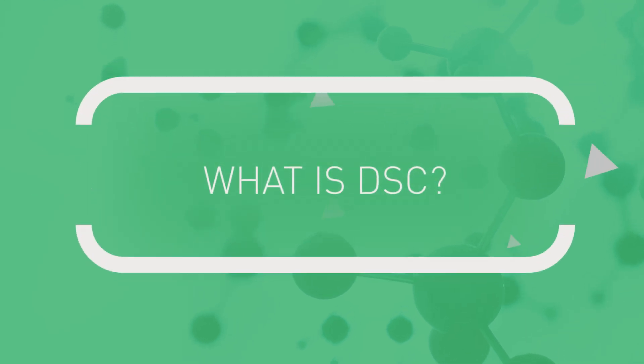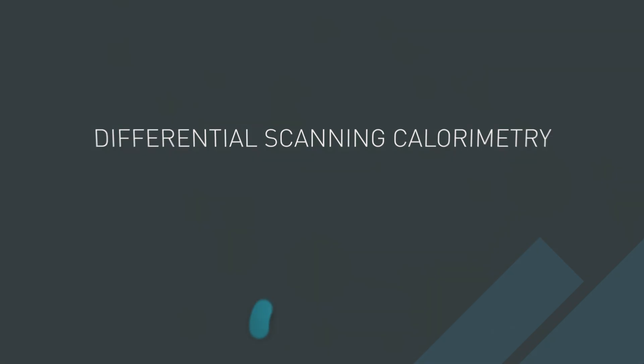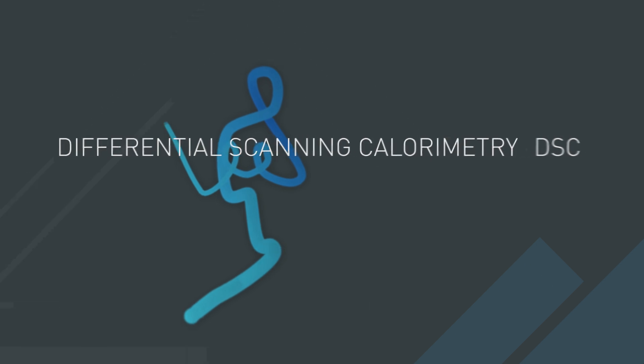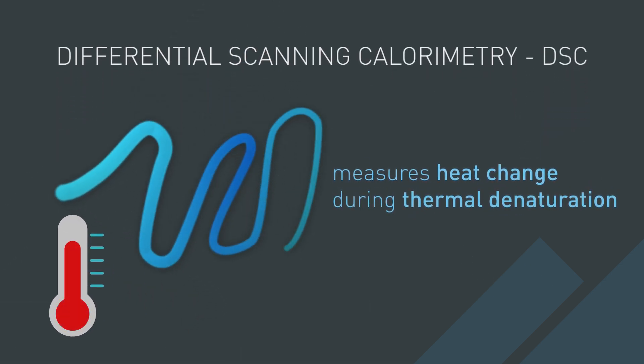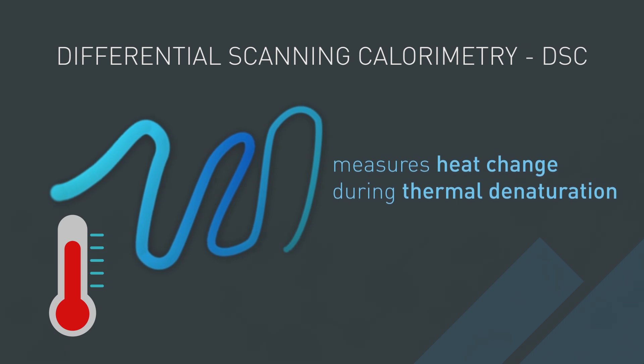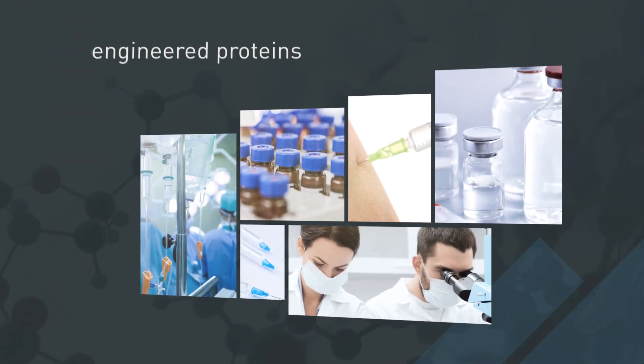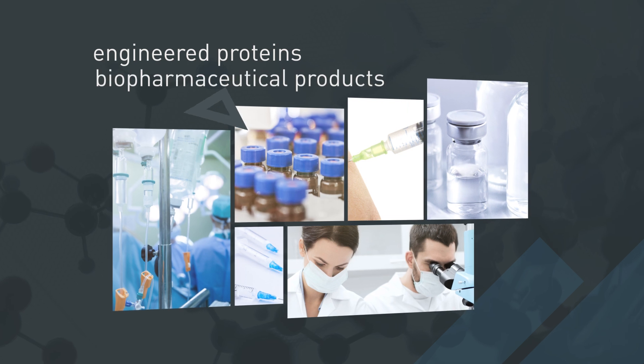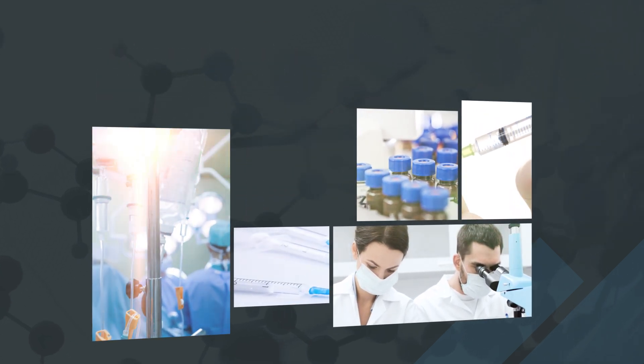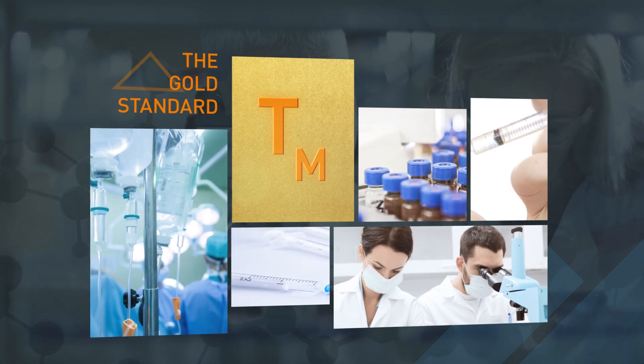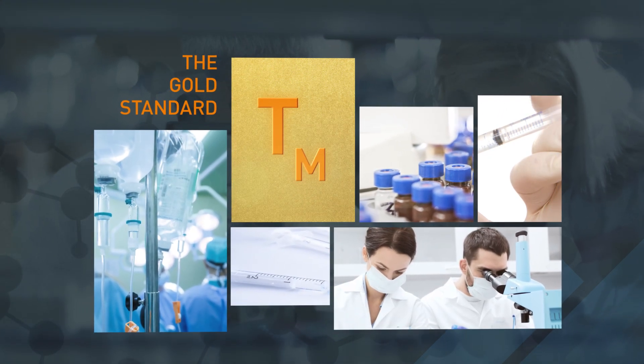What is DSC? Differential scanning calorimetry or DSC measures the heat change during thermal denaturation of biomolecule samples, particularly engineered proteins and biopharmaceutical products. DSC is universally considered the gold standard for measuring TM or the melting temperature of proteins.